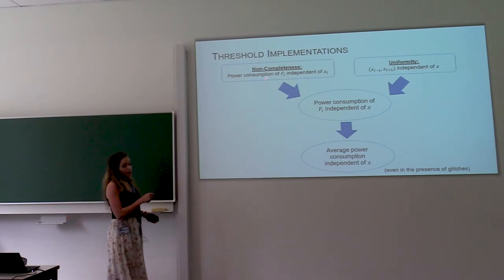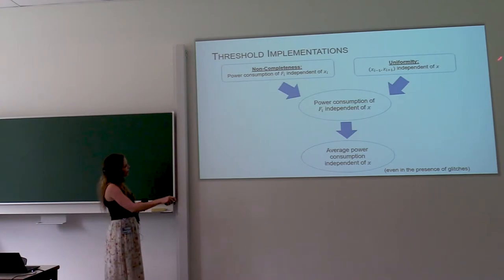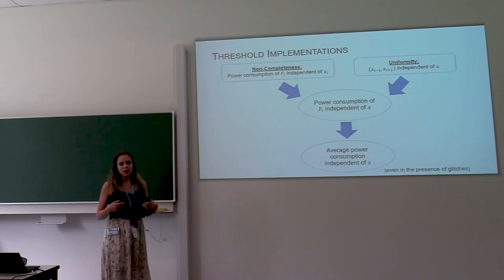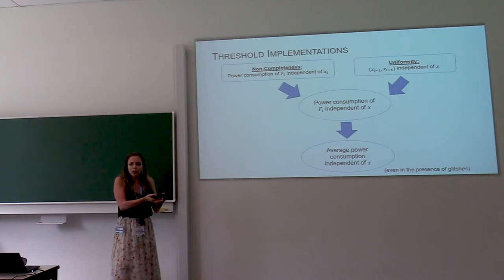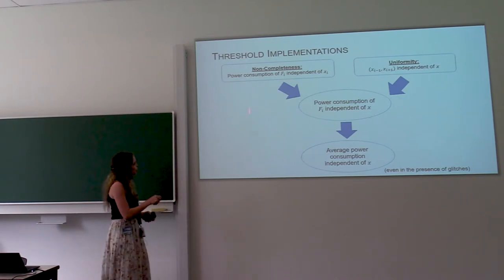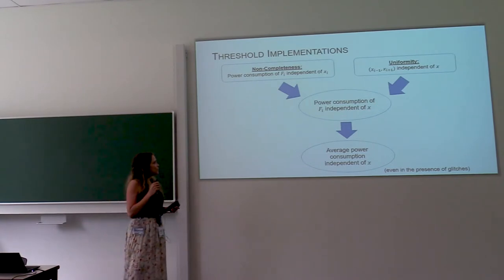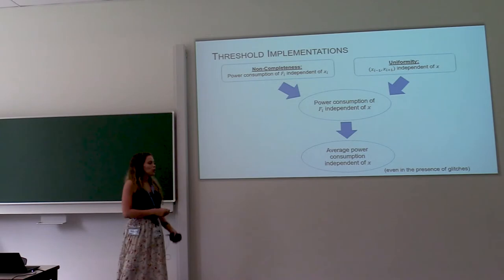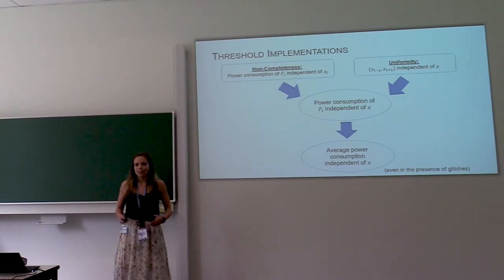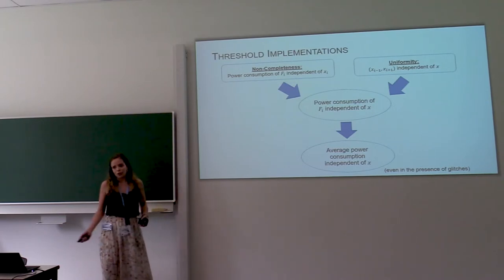So then I can explain to you why threshold implementations have these provable security guarantees. On the one hand, we have non-completeness, which ensures that each component function is independent of at least one input share. On the other hand, we have uniformity. And that means that if you don't have one input share, you don't have any information about the secret. Together this means that the power consumption of each component block is independent of the secret, which then means that the average power consumption of your circuit is independent of the secret. And this is true whether you have glitches or not.